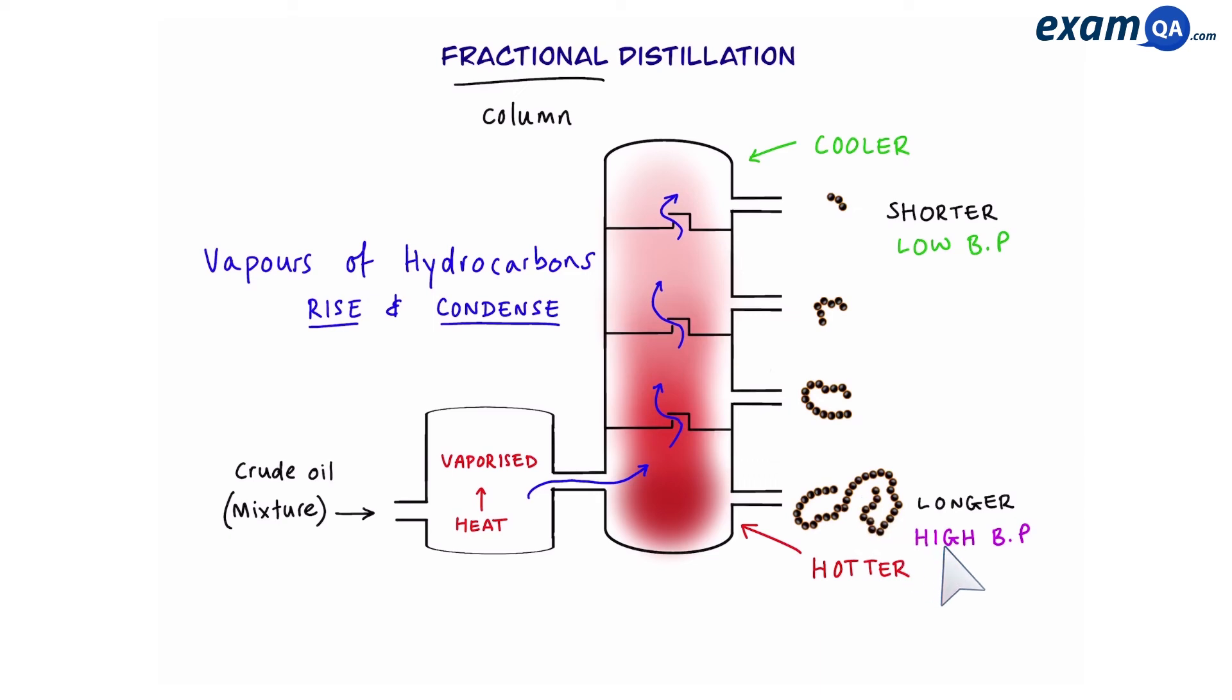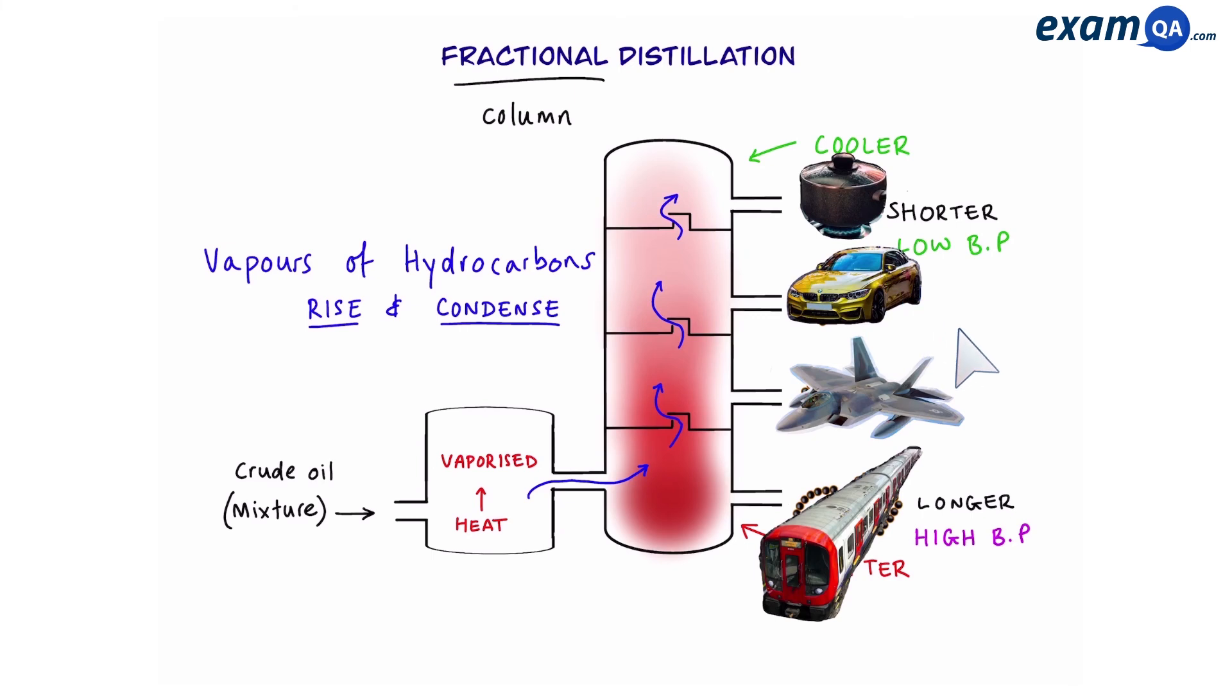Now we've separated the mixture of hydrocarbons into different fractions. These fractions can be used for different purposes such as cooking gas or fuel for cars, planes and trains.